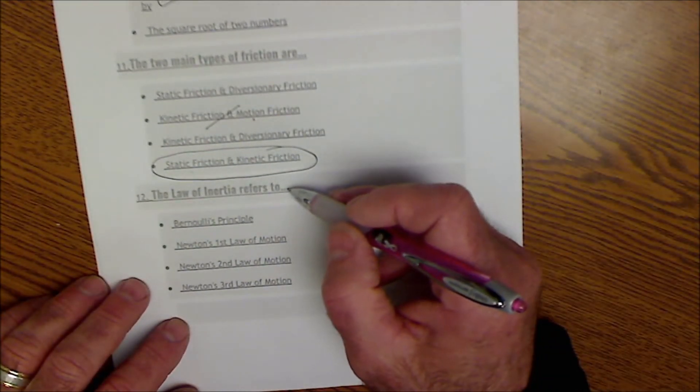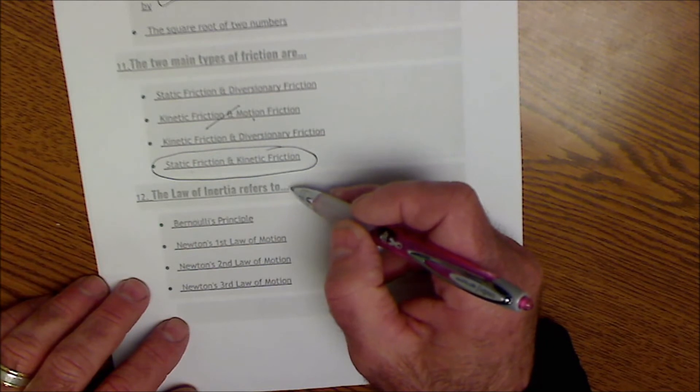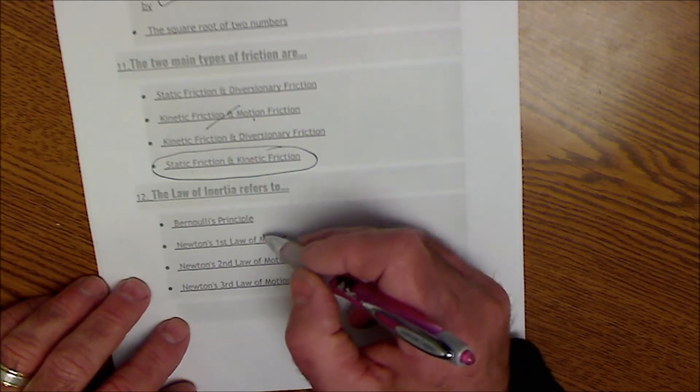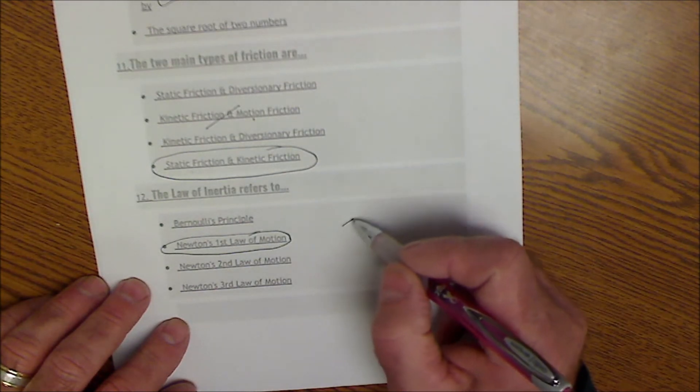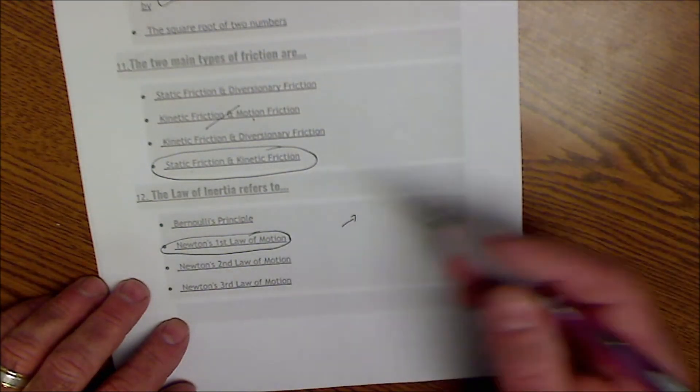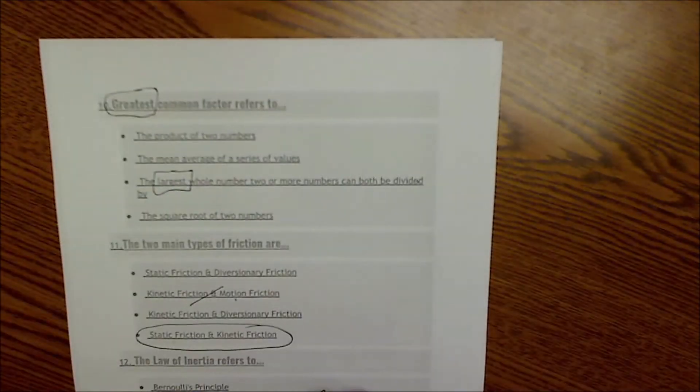The law of inertia. A law of inertia is Newton's first law of motion. So Newton's first law of motion is an object in motion stays in motion. So that's what Newton's first law is. That's number 12.